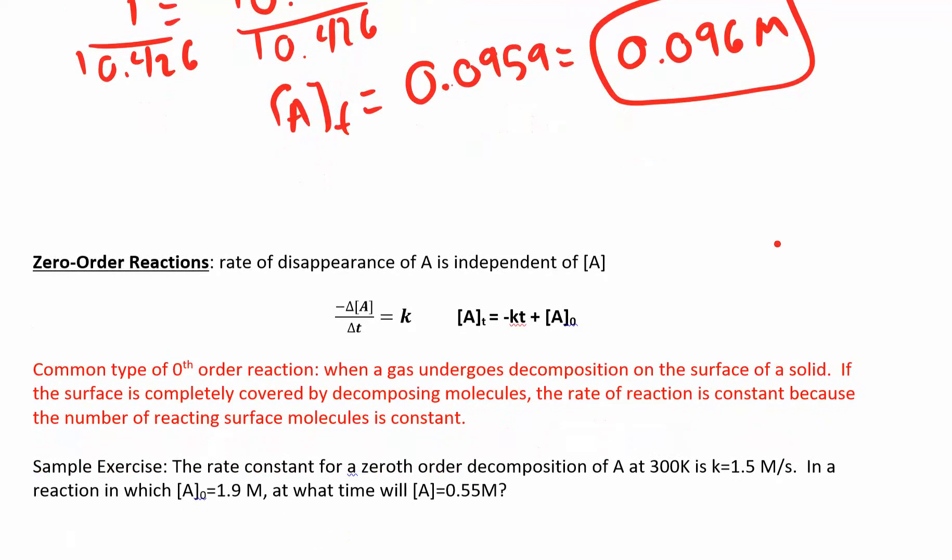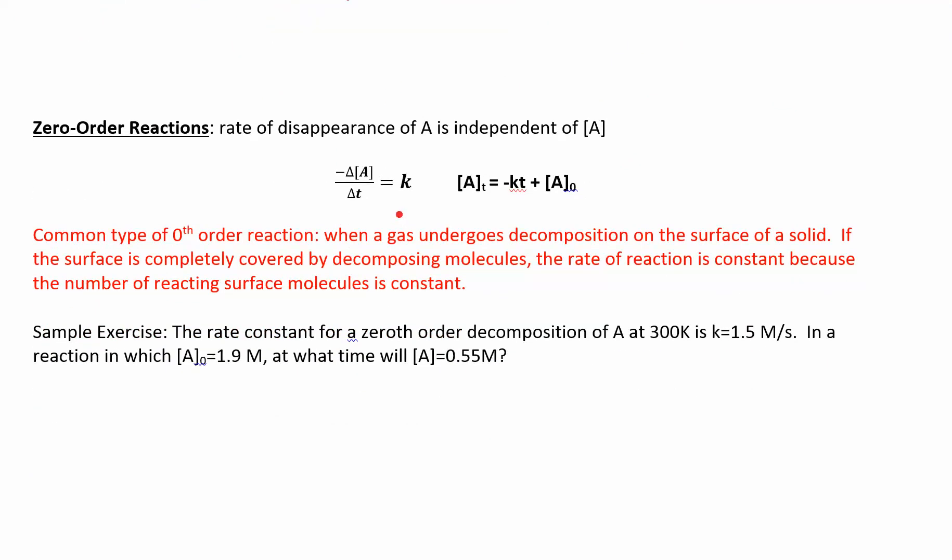So that's a second order reaction. You can also have a zeroth order reaction. Zeroth is when negative dA/dt equals K times A to the zero, which is just 1. So it's just K times A. And then you integrate both sides and you get this guy, which is also a linear equation, Y equals MX plus B. And so now in order to get a straight line, if it's zeroth order, you just have concentration versus time. You get a straight line.